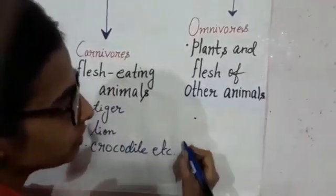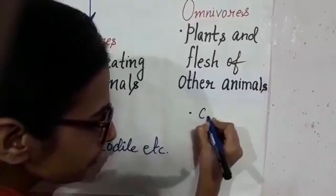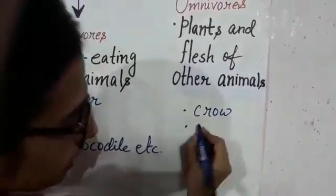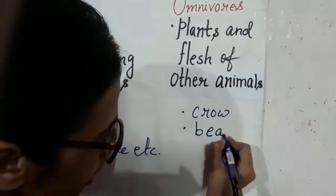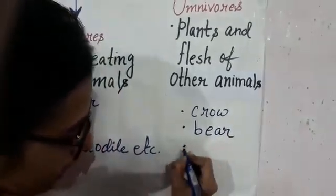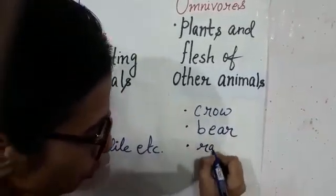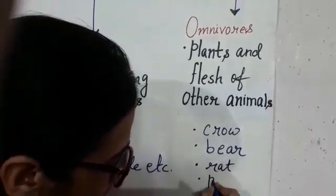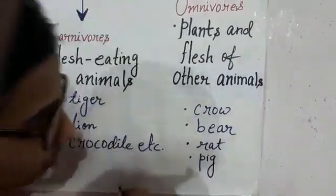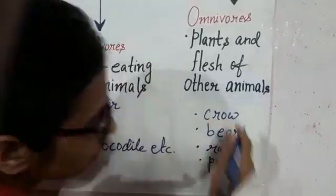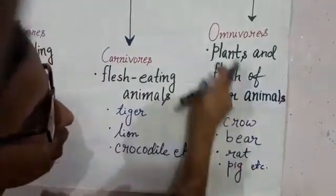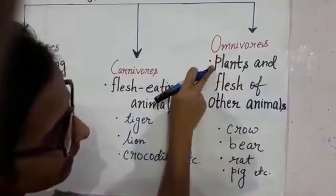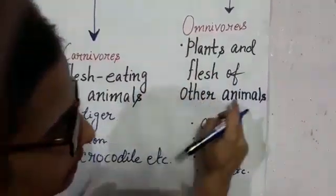Other than humans, we have crow — you can see crows flying here and there. We have bear. Rats are also omnivores. We have pigs. So these animals are called omnivores because they eat both plants as well as flesh of other animals.